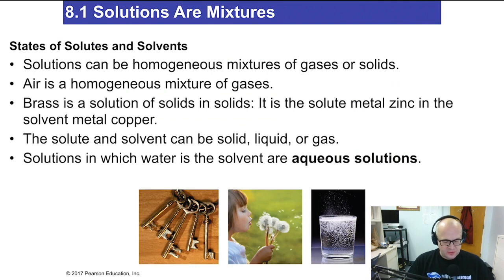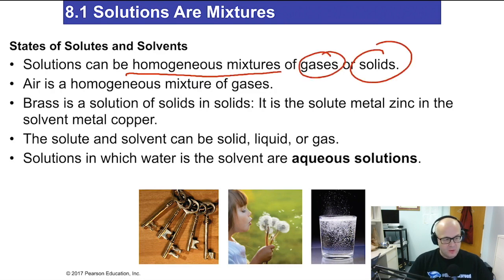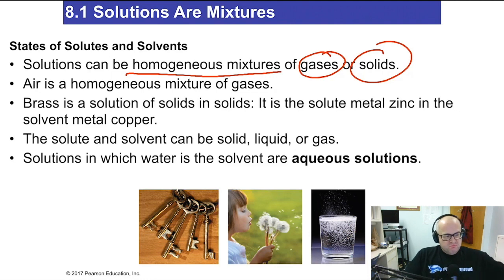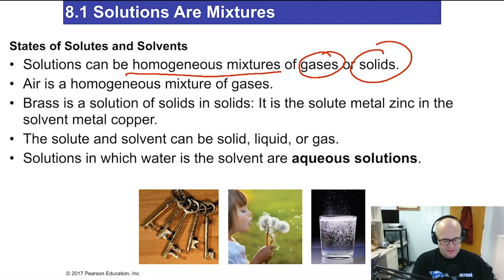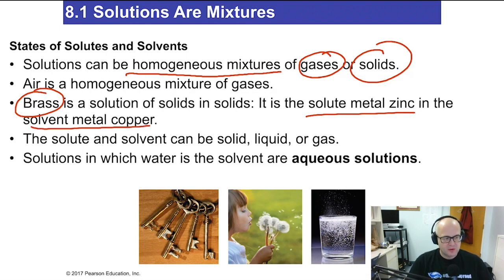States of solutes and solvents: solutions are homogeneous mixtures of gases, solids, or liquids. Air that you're breathing right now is a solution of gases — nitrogen is the solvent, and oxygen, carbon dioxide, and water are solutes, since nitrogen is the most prevalent gas in the atmosphere. Brass, the metal, is an example of a solid solution — the solute is zinc and the solvent is copper, since copper is most prevalent. They dissolve into each other to make the metal brass.